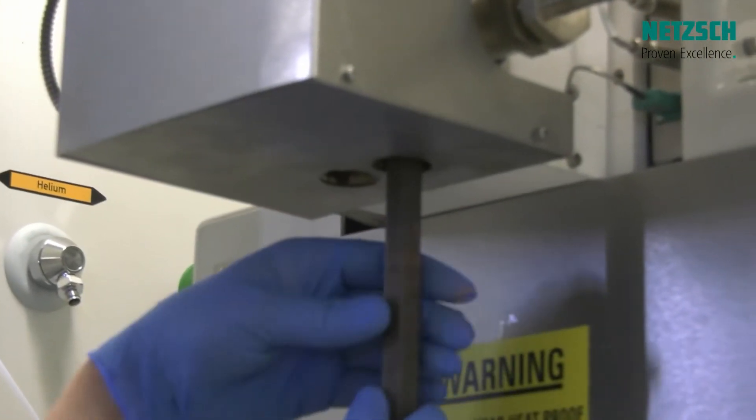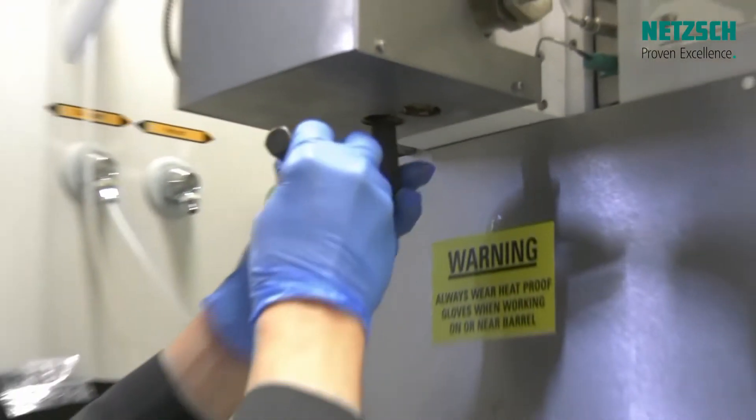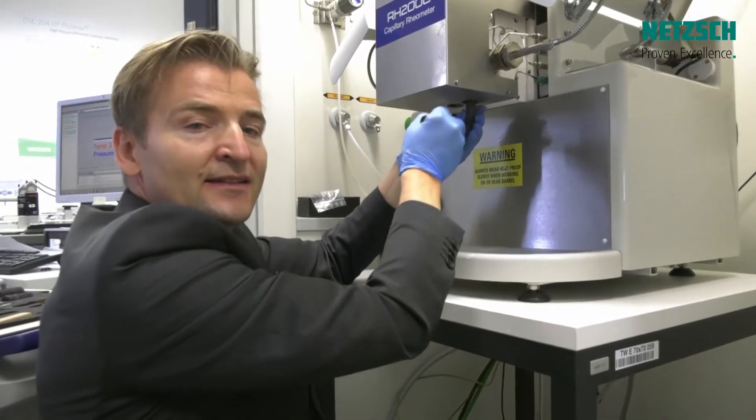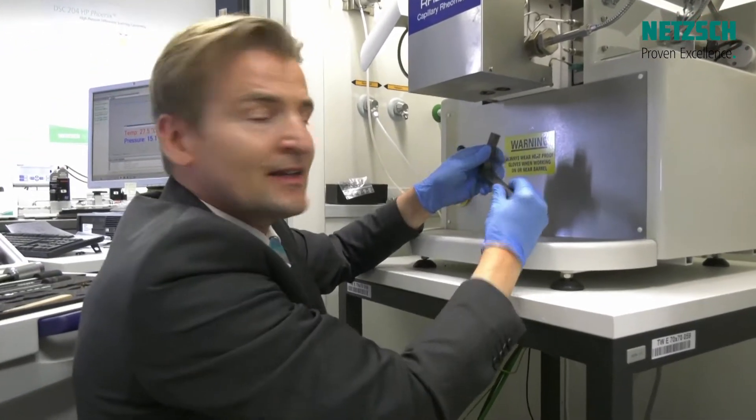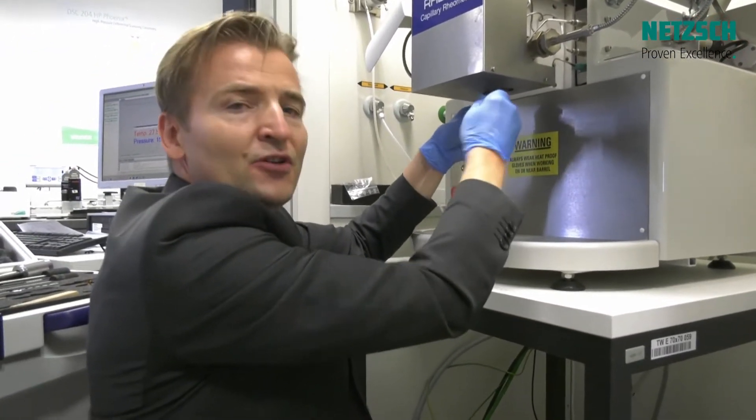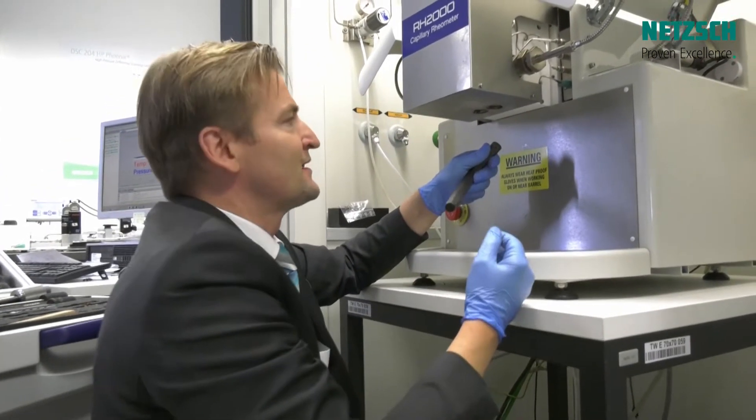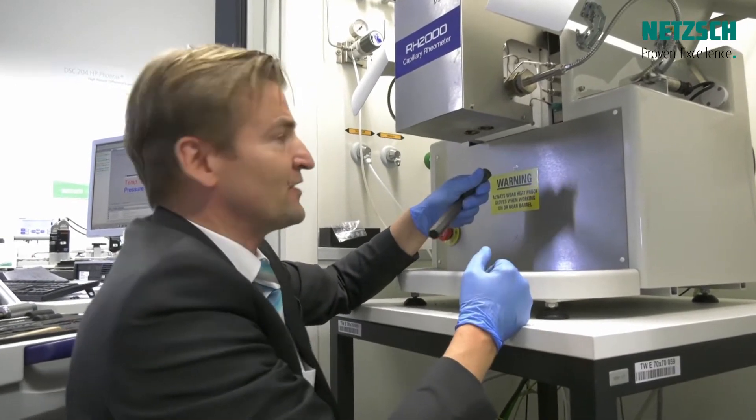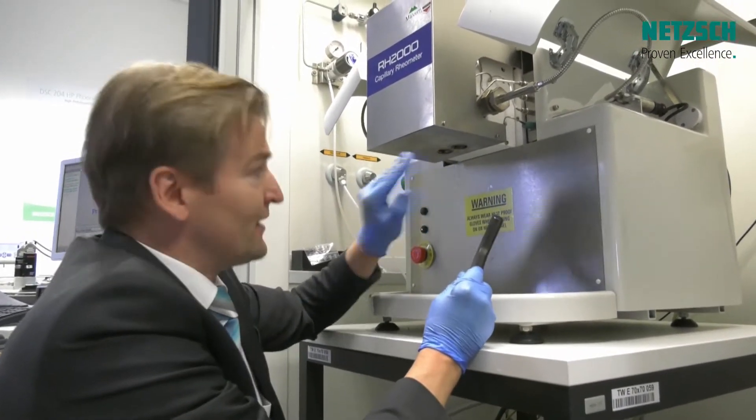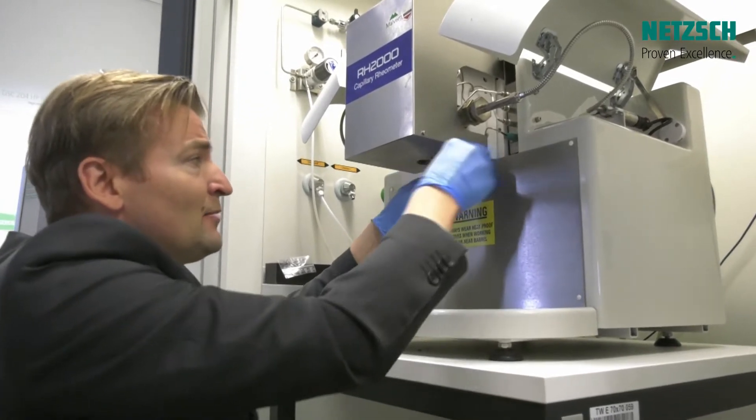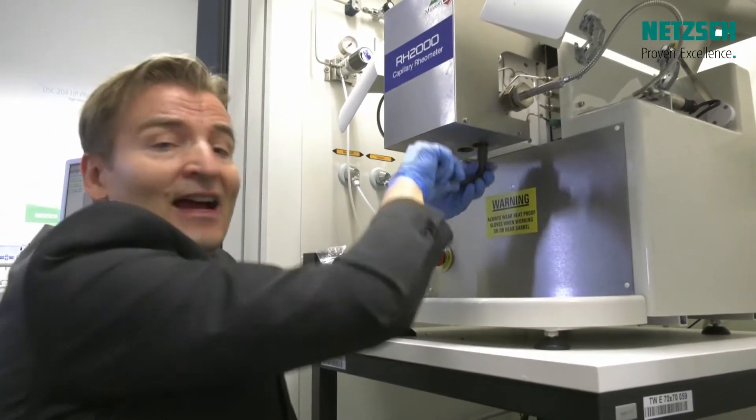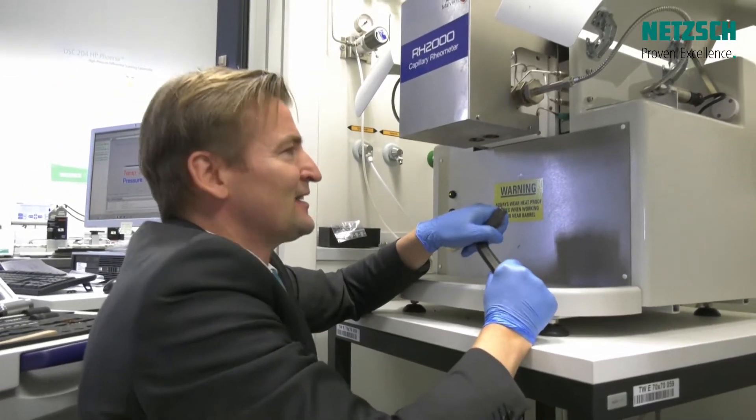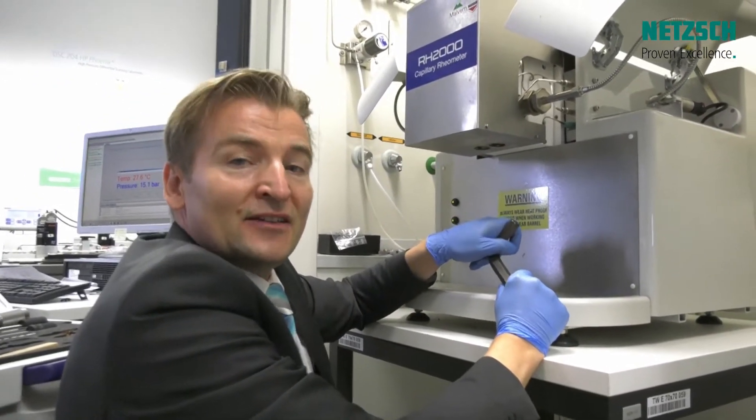The chamber is already heated up to 190 degrees C. We have a standard temperature option which works from ambient to 400 degrees C. There is a high temperature option available from ambient to 500 degrees C, and there is also a cooling option available down to 5 degrees. So now both dies are inserted into the barrel bore. Please check that both are tightened well because it is a high pressure capillary rheometer. The pressures can go up to 2000 bars.